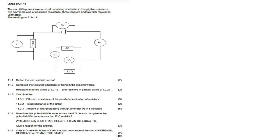Okay, so we have question 11. It says the circuit diagram shows a circuit consisting of a battery of negligible resistance, two ammeters also of negligible resistance, three resistors and two high resistance voltmeters. The reading on A1 is one ampere.